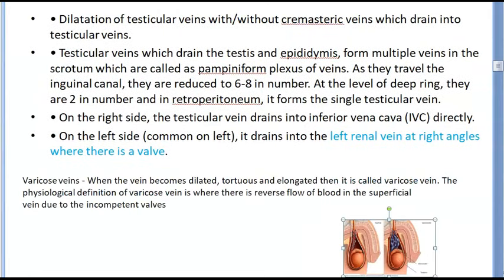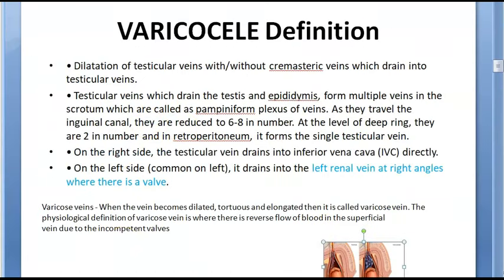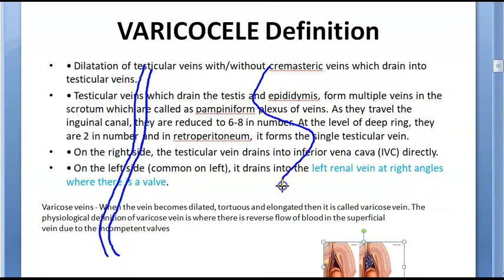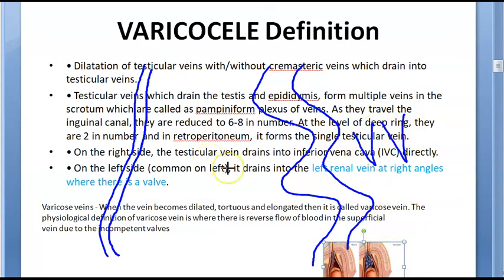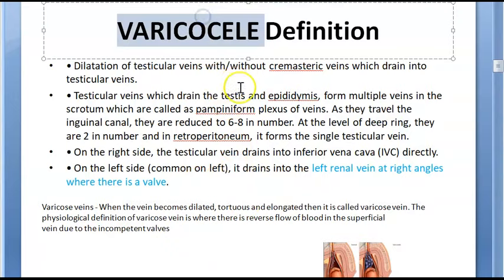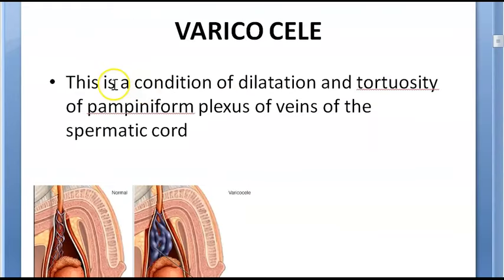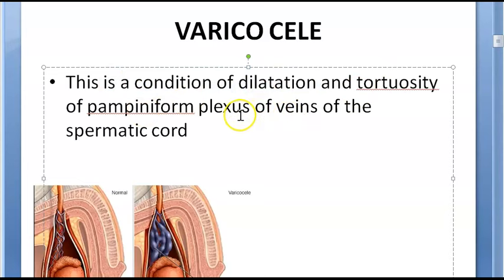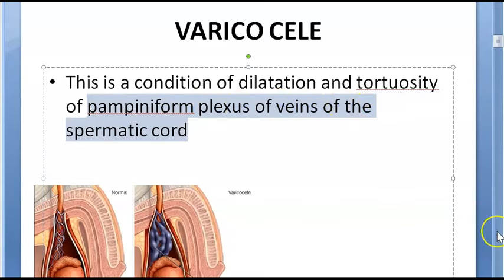So varicocele is essentially an example of a varicose vein — a dilated, tortuous, and elongated vein. The definition of varicocele is the dilation, tortuosity, and elongation of the pampiniform plexus of veins of the spermatic cord.